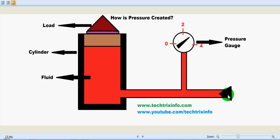And as it is blocked, the fluid is not able to get displaced. That pressure builds up inside this cylinder and is shown on the pressure gauge.